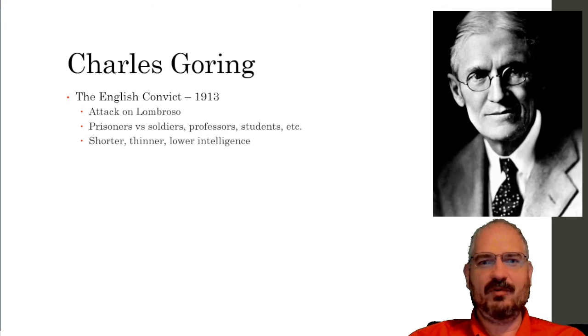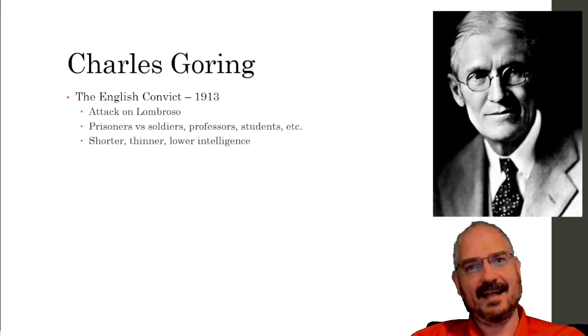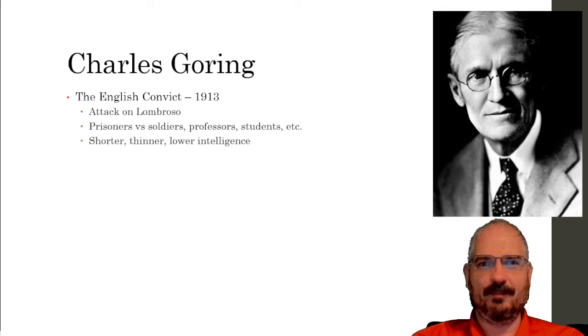The only real physical signs you could tell, according to Goring, were that prisoners were shorter, thinner, and of lower intelligence. Keep in mind that this lower intelligence was not based on any kind of measurement—this was just his personal opinion that he claims to have seen clear evidence of, but there was no formal or scientific measurement of this level of intelligence.